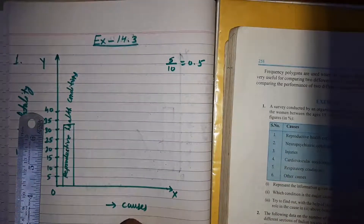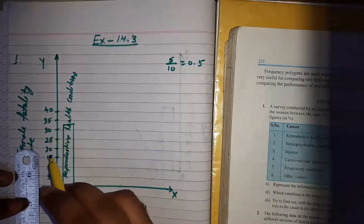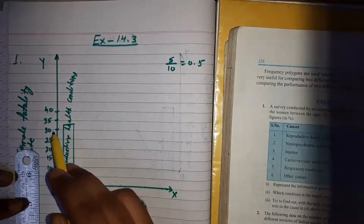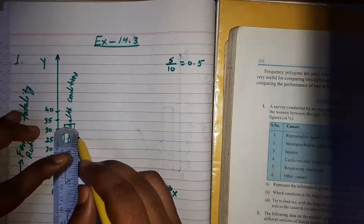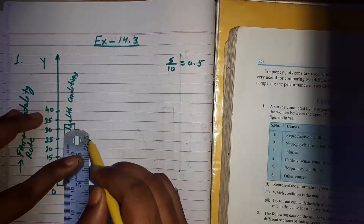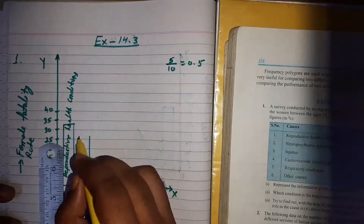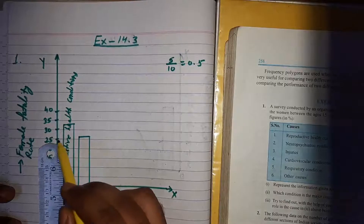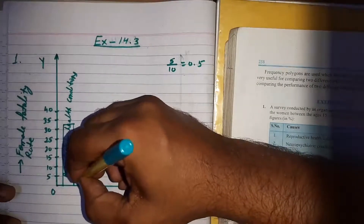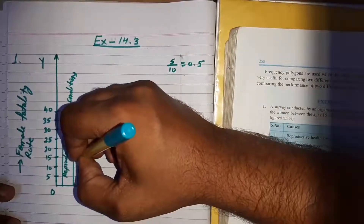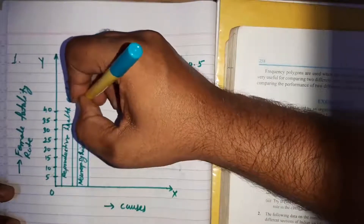The second cause is neurological condition with frequency 25.4. It lies between 25 and 30. Covering one line between 25 and 30 gives 25.5, which is nearly equal to 25.4. We draw the rectangle bar up to one line above 25 for the neurological condition.